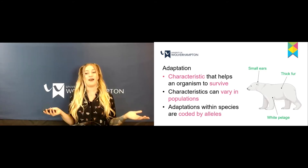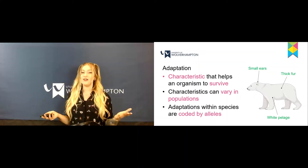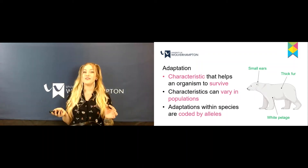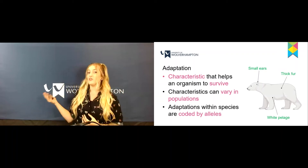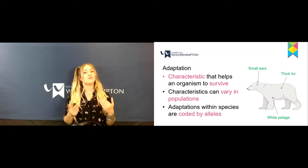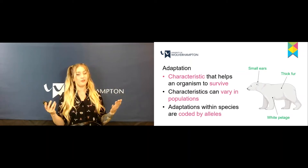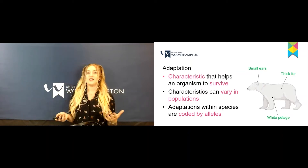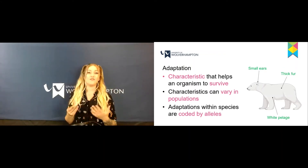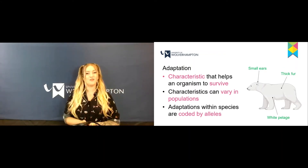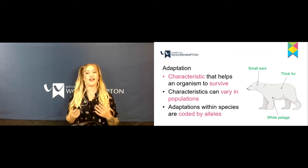For example, take the polar bear. It's white in colour which helps it to camouflage. It has small ears which helps against the cold weather in its environment, as well as its thick fur, and it has black skin which also absorbs the sun. These are all adaptations that the animal has made and evolved to have through their environments, and these are all coded by their respective alleles.